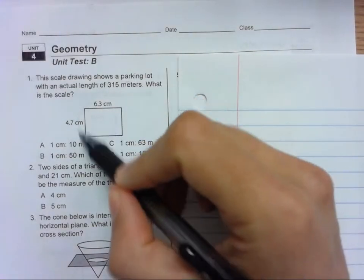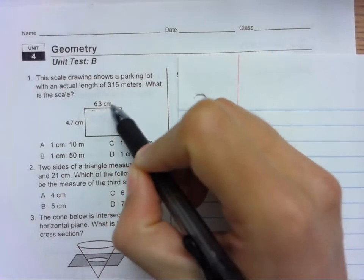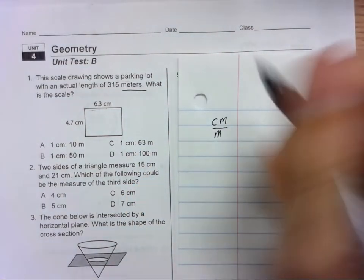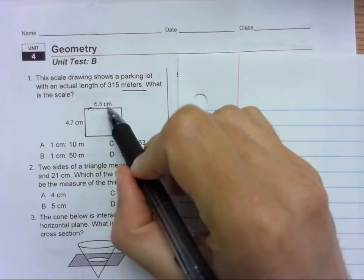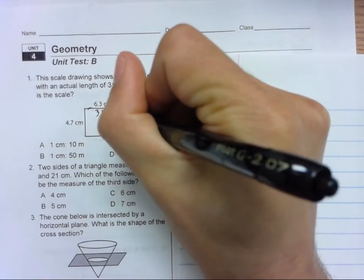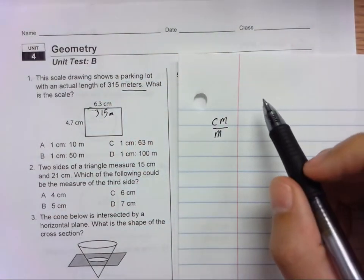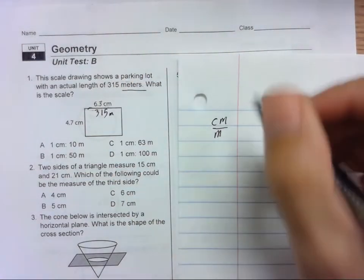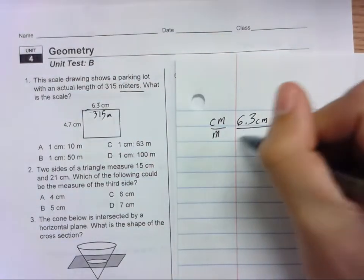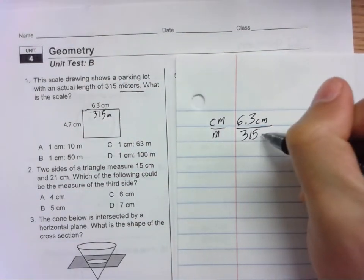This is 6.3 centimeters and we have meters. So we have centimeters and meters. Now this is 6.3 centimeters, but it's actually 315 meters. So 6.3 centimeters is 315 meters according to this scale.